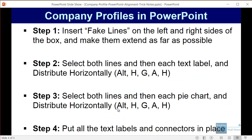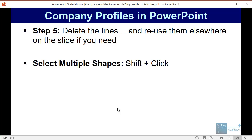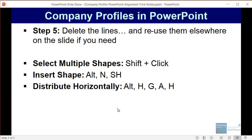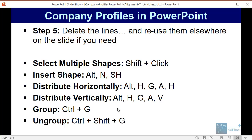To review the key shortcuts: you can select multiple shapes with Shift and then click the left mouse button. You can insert a shape with Alt N SH. You can distribute shapes horizontally with Alt H G A H, or vertically with Alt H G A V. You can right-align or left-align with Alt H G A R or Alt H G A L. You can group shapes with Ctrl G, and ungroup them with Ctrl Shift G — holding Ctrl, then Shift, then pressing G.